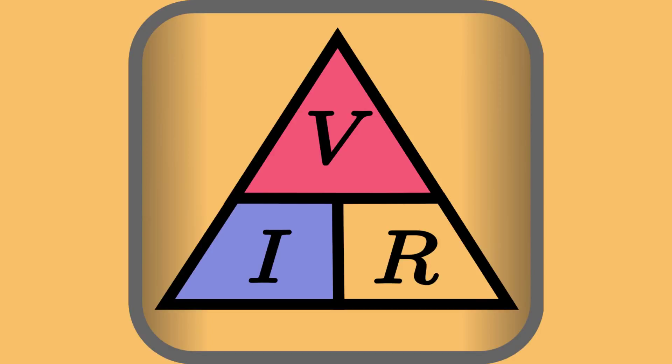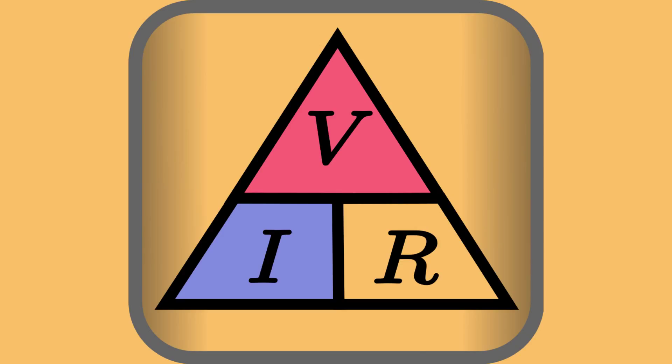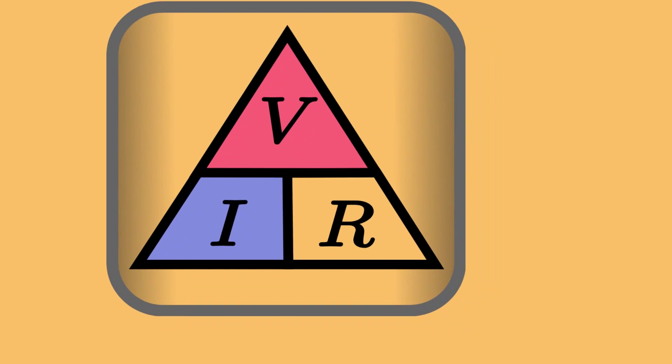So let's talk Ohm's Law. This is the basic diagram for Ohm's Law. We have volts over current and resistance, commonly referred to as V over IR. Let's start out with a simple circuit, which consists of a battery, a light bulb, and a switch. So what does that have to do with Ohm's Law? Let's take a look.